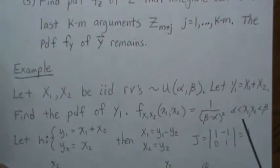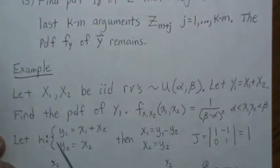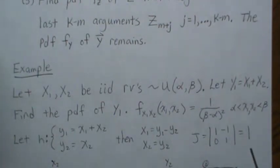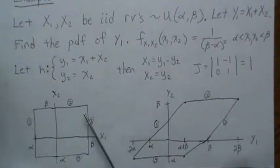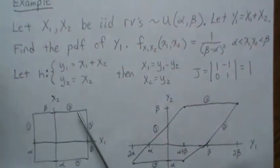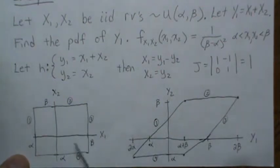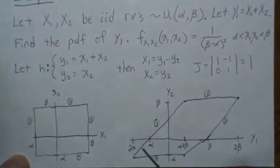We define Y1 = X1 + X2 and introduce Y2 = X2 so we can go from R² to R². Back-solving gives us X1 = Y1 − Y2 and X2 = Y2. We then compute the Jacobian of this transformation. To find the integration region, I map the boundaries of the original x1-x2 space — which runs from alpha to beta in each dimension — over to the y1-y2 space, where borders map to borders.